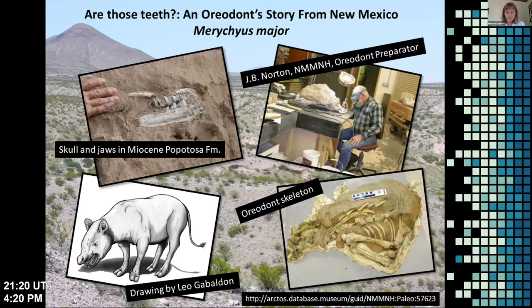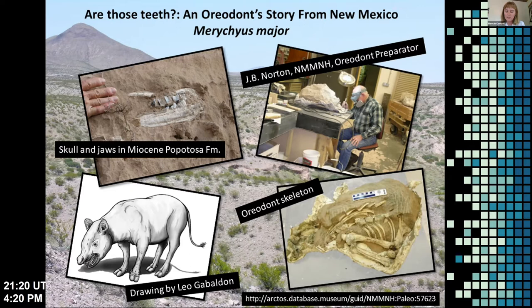When the skull was fully exposed, the hyoid bones — the bones at the base of the tongue — and the larynx were found. The larynx was ossified. Both the hyoid bones and larynx are rarely preserved as fossils. Based on this bone-like larynx, it is believed the species was able to produce loud vocalizations, much like the howler monkey that exists today. This specimen has been the only one of its kind found in the Popotosa Formation, which is part of the Santa Fe Group, as well as being the largest of the genus Merycochoerus currently known. A radioisotopic date indicates a late Miocene age of about 10 million years, making it the youngest oreodont known from New Mexico.